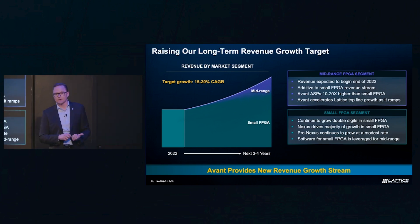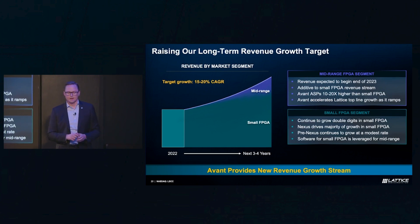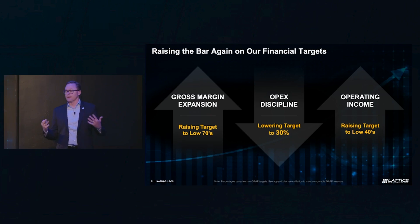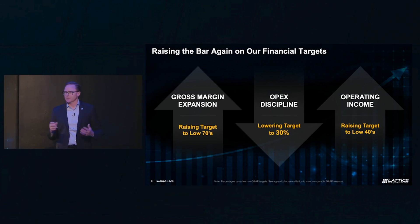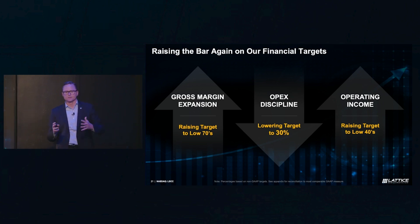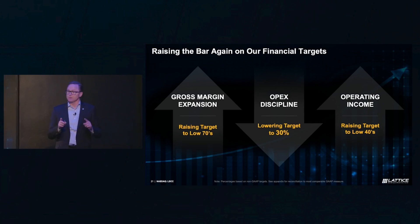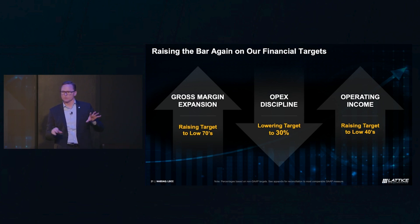Beyond top-line growth, we're also raising the bar on our other financial targets. We're raising our gross margin target to now the low 70s — significantly higher than what we talked about a couple years ago. Our OPEX target is set at 30% of revenue — the right investment level, balancing funding for the great growth opportunity ahead while staying disciplined. And we're raising our operating income target to over 40%, to the low 40s. That's a big jump from what we talked about two years ago, and I think the combination of that revenue growth target with that profitability target really stands out in the semiconductor industry.